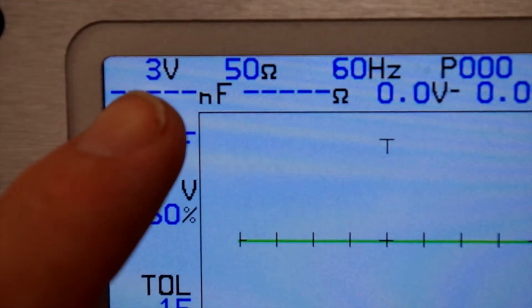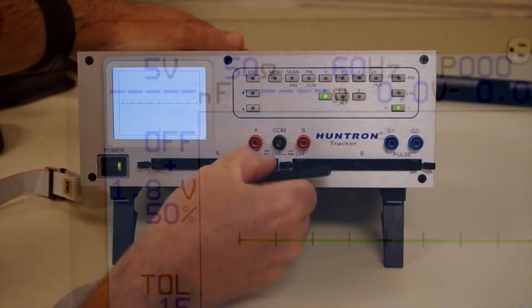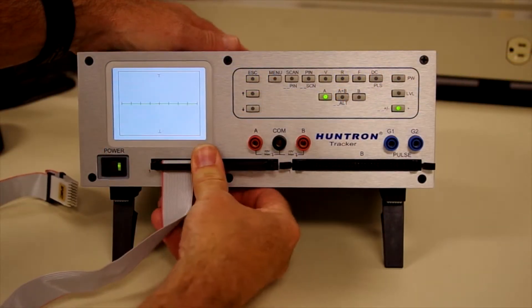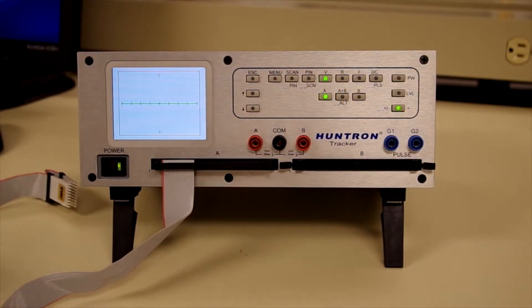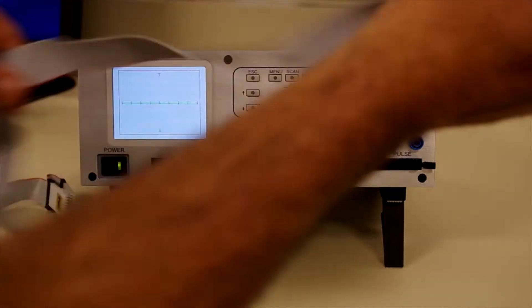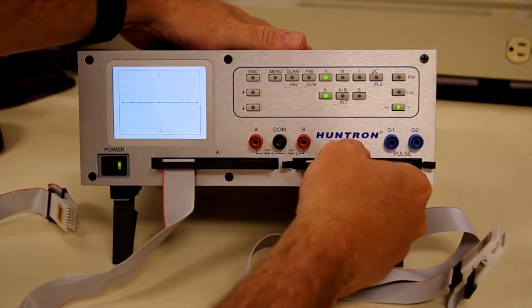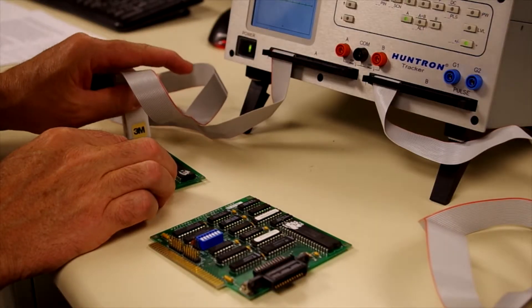The tracker 3200S can use cable-based interfaces such as dip clips and cables to make scanning through multi-pin devices faster. 64 pins per channel are available.